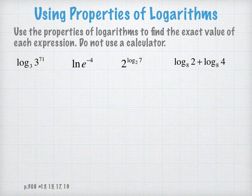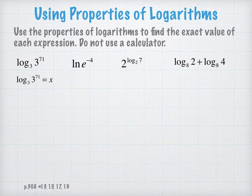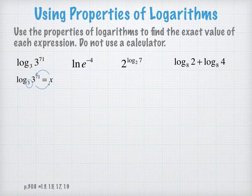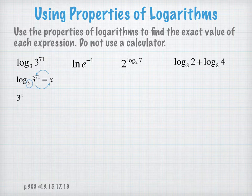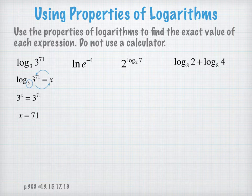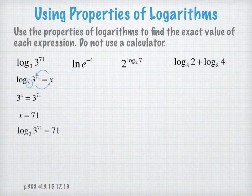We can set that expression equal to x. Now we can observe that we have a typical logarithmic structure here, so we could rewrite this logarithmic statement as an exponential statement: 3 to the x power equals 3 to the 71. Let's notice that our bases are equal, therefore our exponents will be equal. And now I have solved the problem. The value of log to the base 3 of 3 to the 71 equals 71.